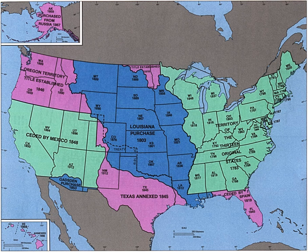Panama Canal Zone: The Panama Canal Zone was an unorganized U.S. territory located within the Republic of Panama. It was established under the Hay-Bunau-Varilla Treaty in 1903 and disestablished in 1979 under the Torrijos-Carter Treaties. Panama gained full control over the Panama Canal in 1999.